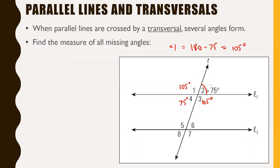The real question is how we jump from this section to the section down here. Notice this angle we were given — angle two of 75 degrees — looks pretty much the exact same as the corresponding angle below. Because these two lines are parallel to one another and will never touch, you can guarantee those two angles are the same: 75 degrees. By the same logic, we can finish the rest off: 105, 75, and 105 degrees.